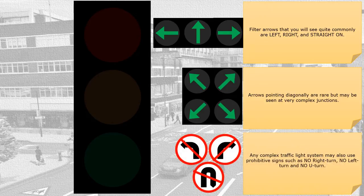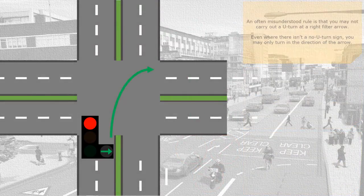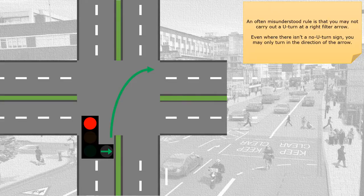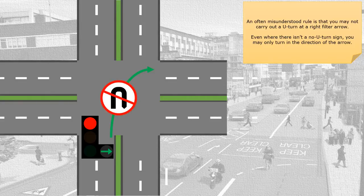Any complex traffic light system may also use prohibitive signs, such as no right turn, no left turn, and no U-turn. An often misunderstood rule is that you may not carry out a U-turn at a right filter arrow, even where there isn't a no U-turn sign. You may turn only in the direction of the arrow.